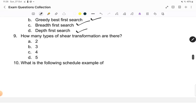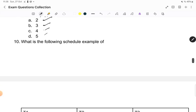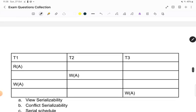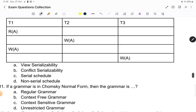Next was how many types of shear transformations are there? 2, 3, 4, 5. Which of the following schedule is an example of? So this was the diagram given and what is it? Is it view serializable, conflict serializable, serial schedule, or non-serial schedule?